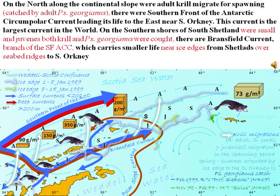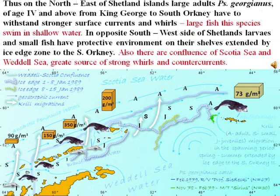To the north along the continental slope where adult krill migrate for spawning, there is the southern front of the Antarctic Circumpolar Current, the largest current in the world, leading eastward near South Orkney. On the southern shores of South Shetland there is the Bransfield Current, which carries small krill from Shetland to South Orkney Island. Thus on the north and east of Shetland, large adult Georgianus of age 4 and above from King Georgia to South Orkney must withstand stronger surface currents and whirls.